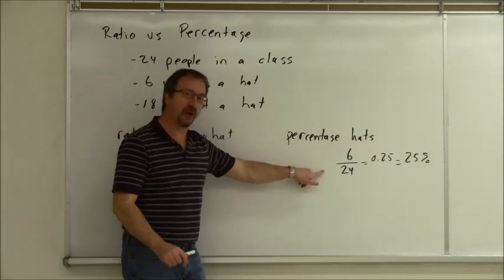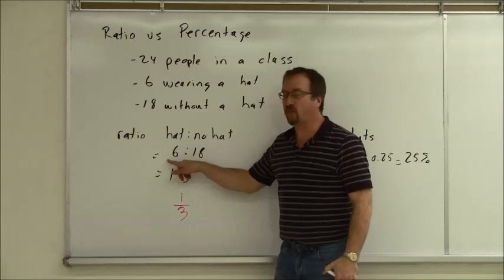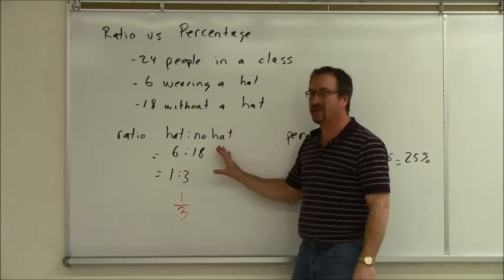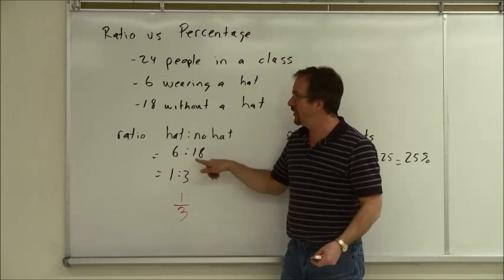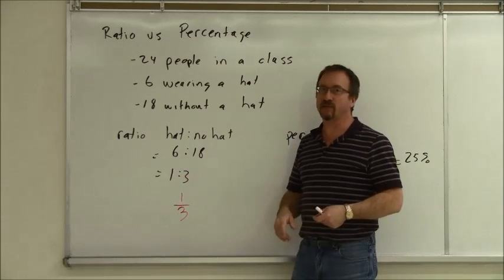So it's a little different. Here it's 6 out of the total of 24. Here it's 6 of one, 18 of the other. Sure the total is 24, but 24 doesn't come into it. 6 people had one attribute wearing a hat, 18 people had the other attribute not wearing a hat, and we could boil that down to a 1 to 3.